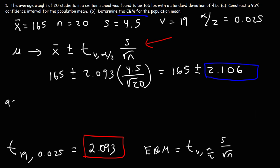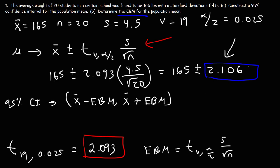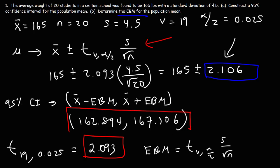To construct the 95% confidence interval, it's the sample mean minus EBM to the sample mean plus EBM. So 165 minus 2.106 equals 162.894, and 165 plus 2.106 equals 167.106. This is our 95% confidence interval. We are 95% confident that the average weight of all the students in this school is somewhere between 162.894 and 167.106 pounds. That's how you construct a confidence interval using the student's t distribution table.